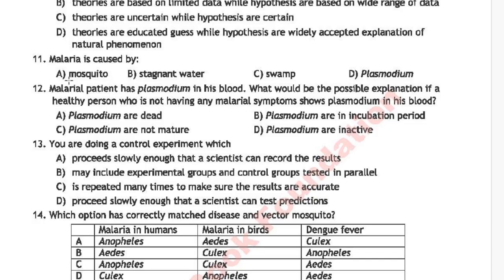MCQ number 11: malaria is caused by — option A: mosquito, option B: stagnant water, option C: swamp, option D: plasmodium. The correct answer is option D, plasmodium.